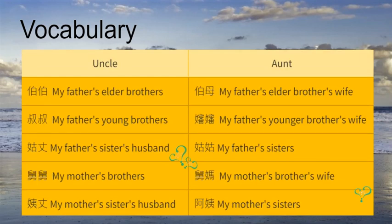Uncle: 伯伯 is my father's older brothers; 叔叔 is my father's younger brothers; 姑丈 is my father's sister's husband; 舅舅 is my mother's brothers; 姨丈 is my mother's sister's husband. Aunt: 伯母 is my father's older brother's wife; 嬸嬸 is my father's younger brother's wife; 姑姑 is my father's sister; 舅媽 is my mother's brother's wife; 阿姨 is my mother's sister.